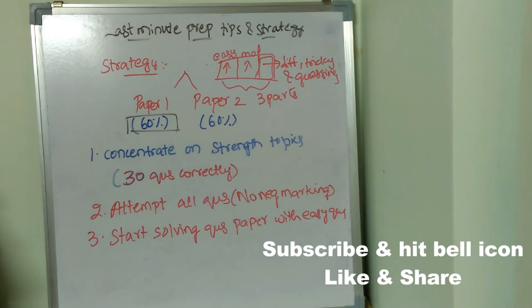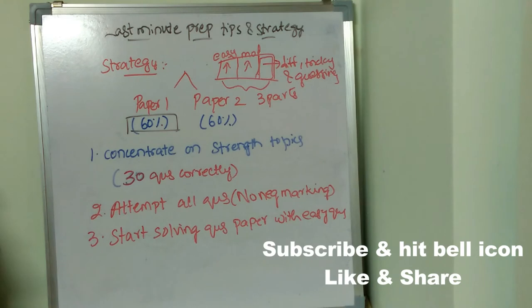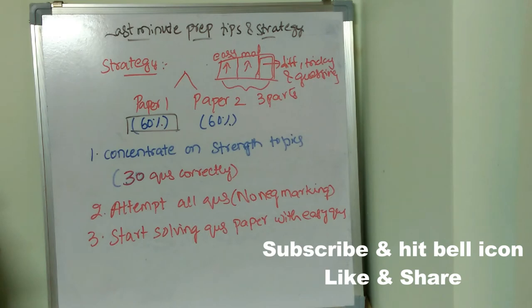In the first one-third of the time, concentrate on solving all the easy questions — all the questions you are very confident with. The second one-third of exam time, give it for moderate questions. If you read the question twice or three times and you know the answer, those are moderate questions.